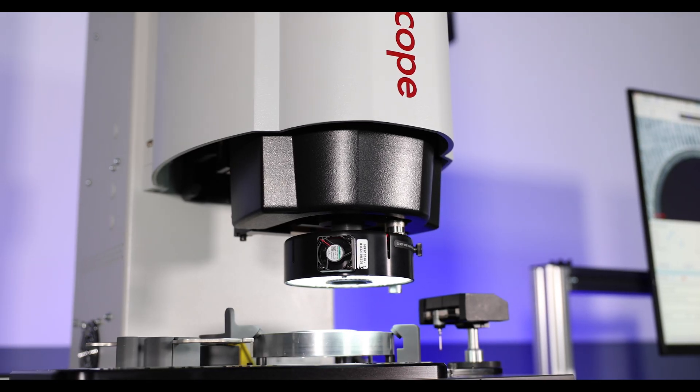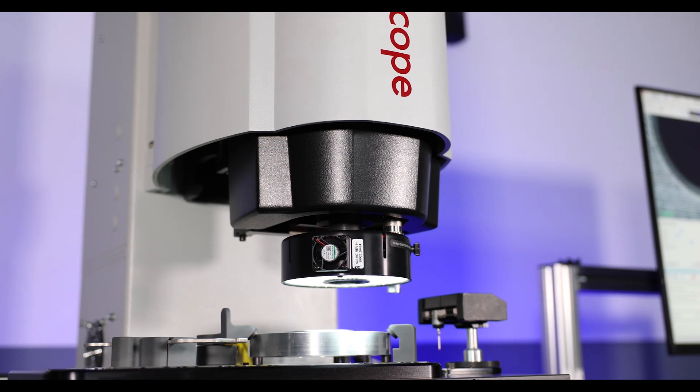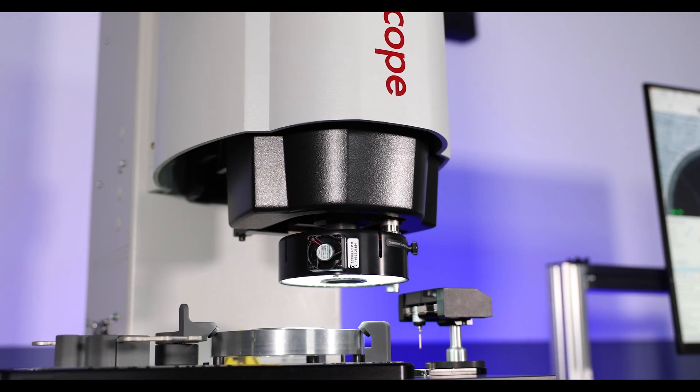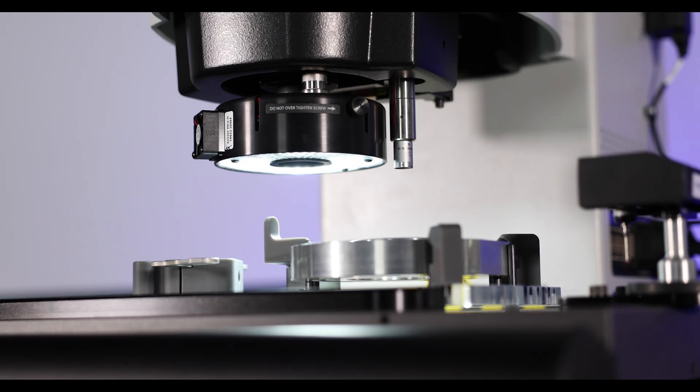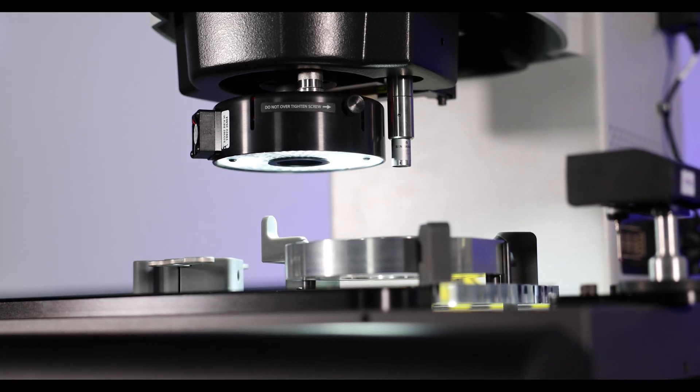SmartScope E-Series systems come standard with an advanced illumination system, all LED coaxial, substage profile, and smart ring light. No light adjustment is needed when changing magnification, making programming fast and easy.